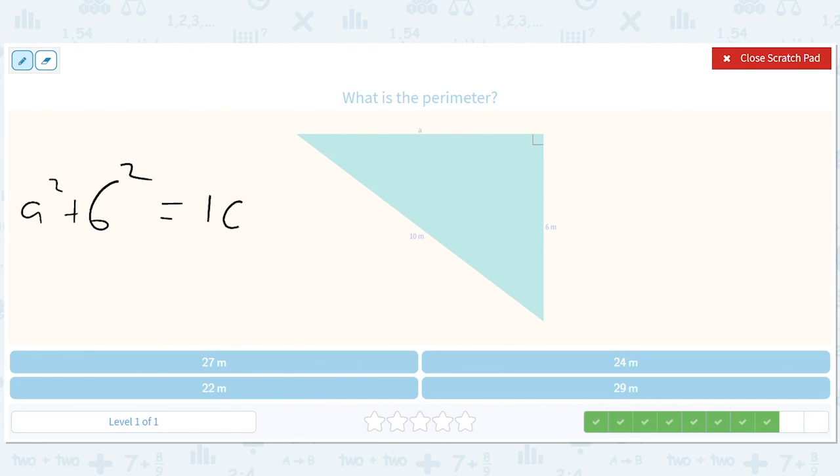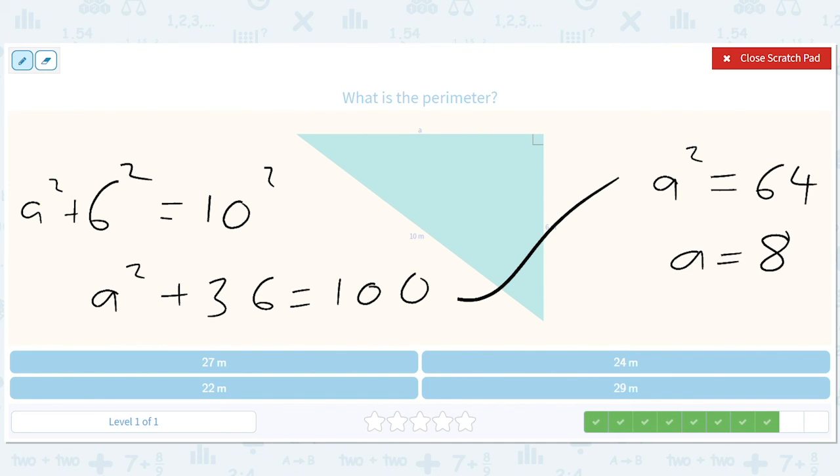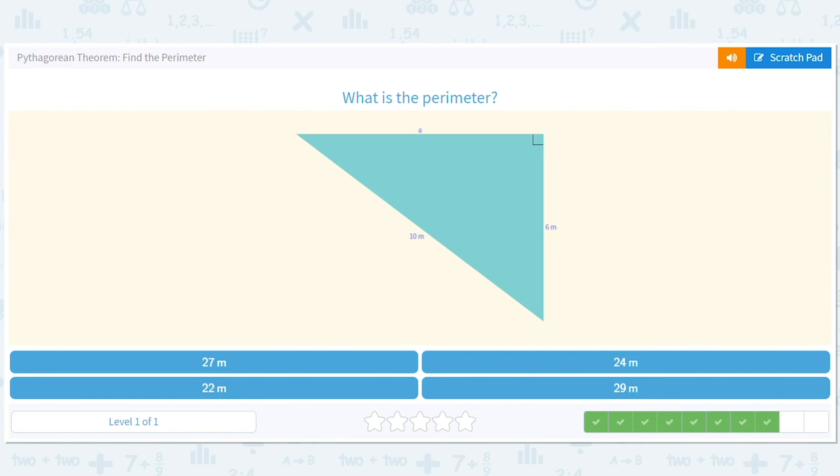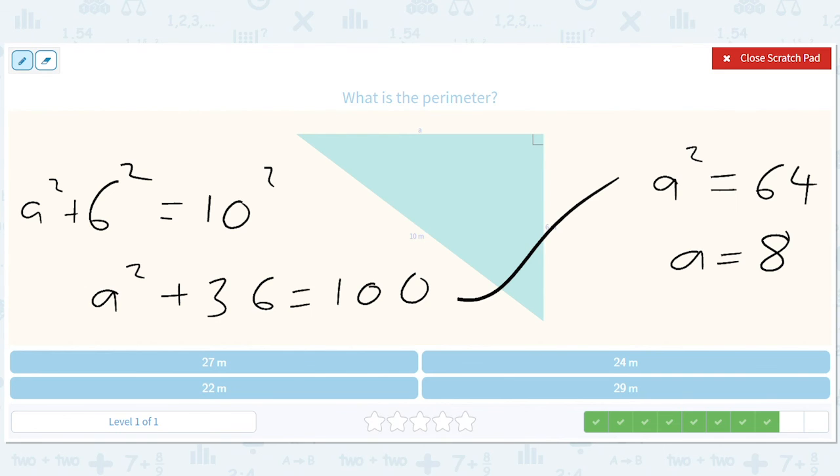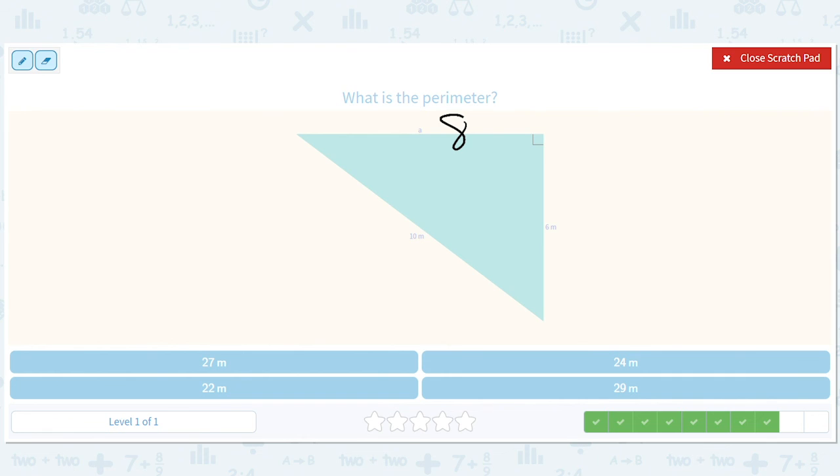But we'll do 6 squared - a squared plus 6 squared equals 10 squared. So this gives us a squared plus 36 equals 100, or a squared equals 64, or a equals 8. So that gives us an 8 there. 8 plus 6, 14. 14 plus 10, 24.